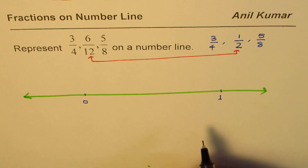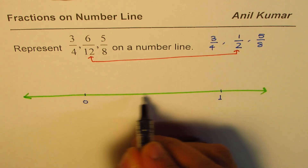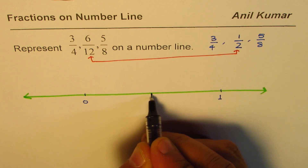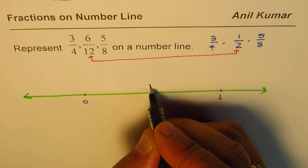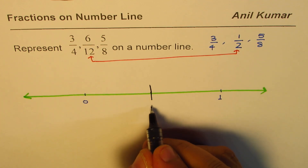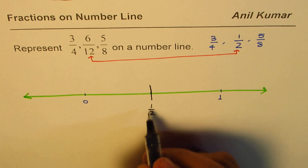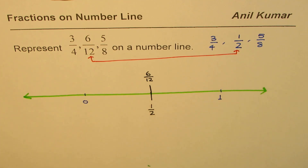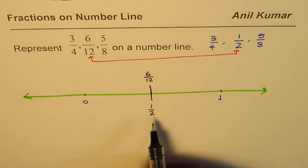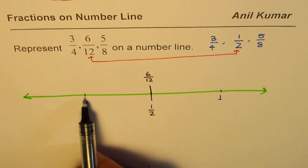Half is probably the easiest — just go to the center of the line. Let me draw a big mark here and write 'half'. So half, or 6/12, is the same thing. 6/12 equals half, so we've got our first fraction placed.